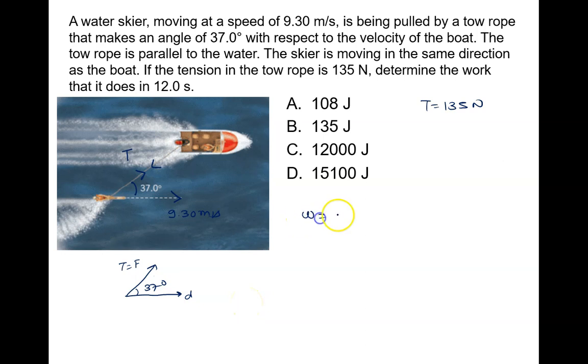Work is given by W equals F times s times cos theta. The value of F is 135. The displacement can be written as velocity times time: 9.30 times 12 seconds.